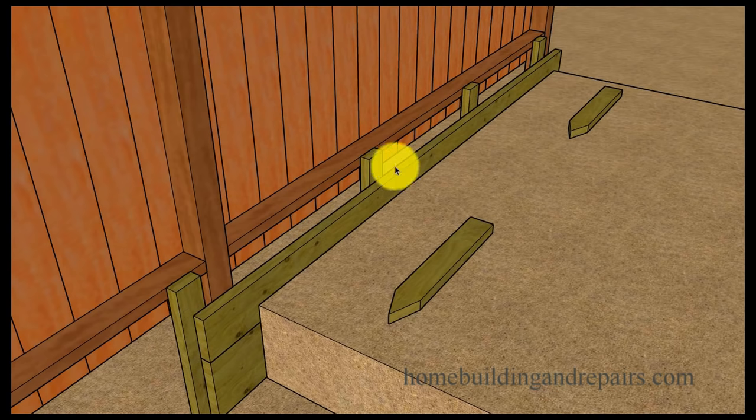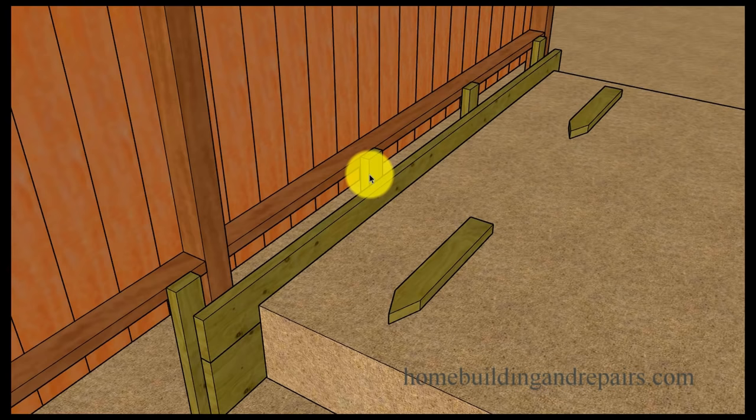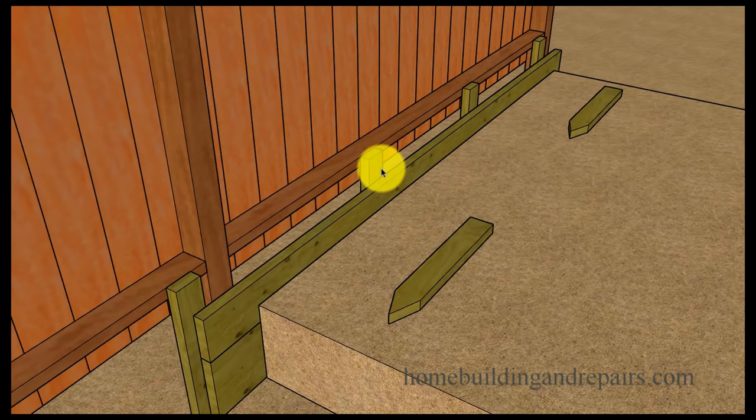Another thing you could do would be to add some 2x4 stakes. And these would need to be pressure treated lumber. Ground rated, obviously. But again, if you're going to use regular wood, you could end up replacing them in the future.